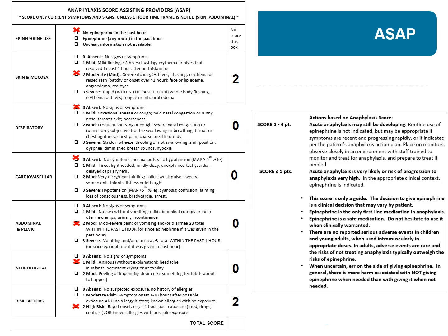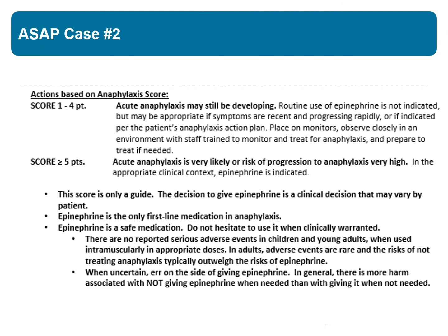For risk factors, that hasn't changed even though more time has passed — his onset was still rapid relative to his exposure, so he still gets two points. Putting this together, he gets two, zero, zero, zero, zero, two — a total score of four. Interpreting that score, in his case the routine use of epinephrine is not indicated. You're still going to put him on monitors, may give him other appropriate treatments for his rash such as an antihistamine and an H2 blocker, and then see how he does over time.